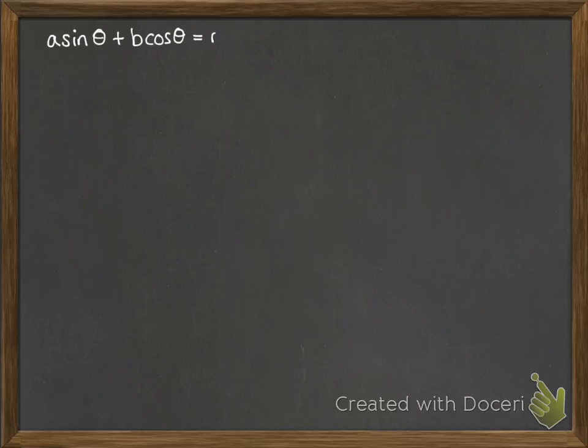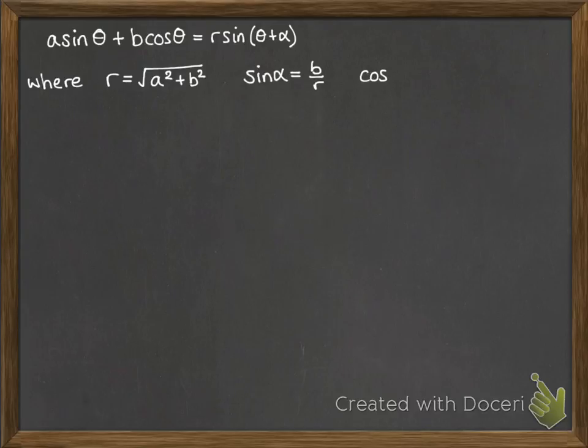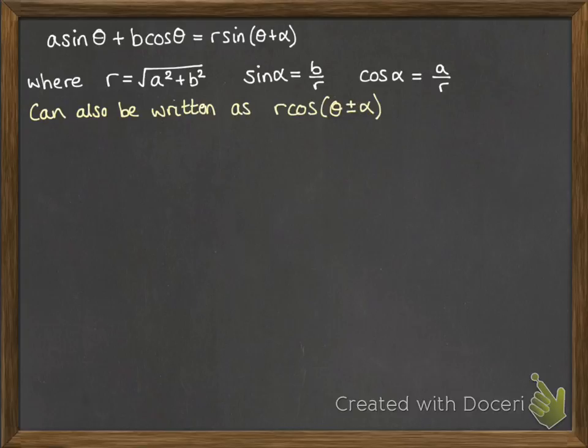Now we can generalize this with the following. So if we just put in terms a and b, then we get these results, where r is going to be the square root of a squared plus b squared. Sine alpha will always be b over r, and cos alpha will be a over r. And we can also do the same sort of process if we want it written in terms of cos instead of sine.